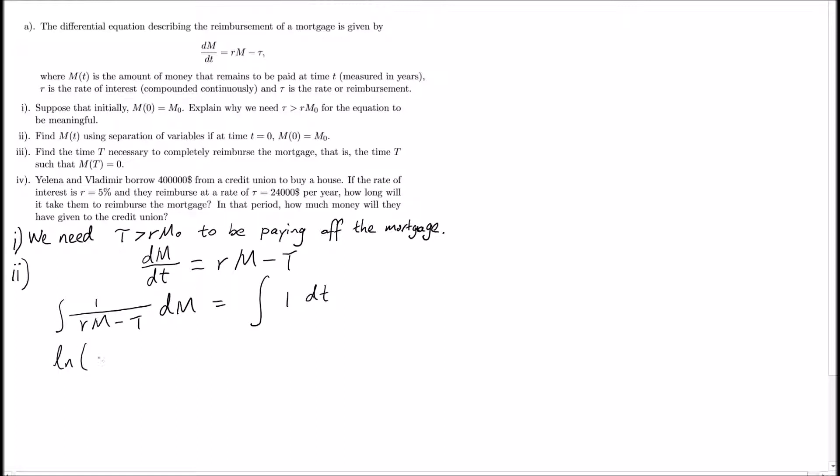We get 1/(T - rM) dM on the left side, then on the other side we integrate. The left hand side gives us 1/r log of T minus rM, and the right hand side is t plus the integration constant c.